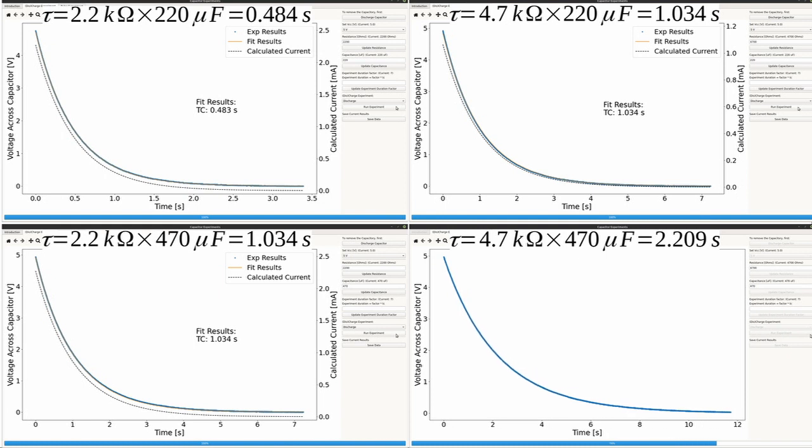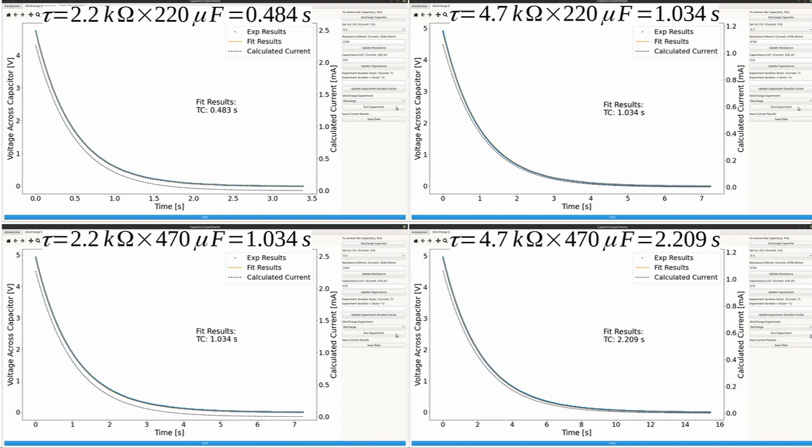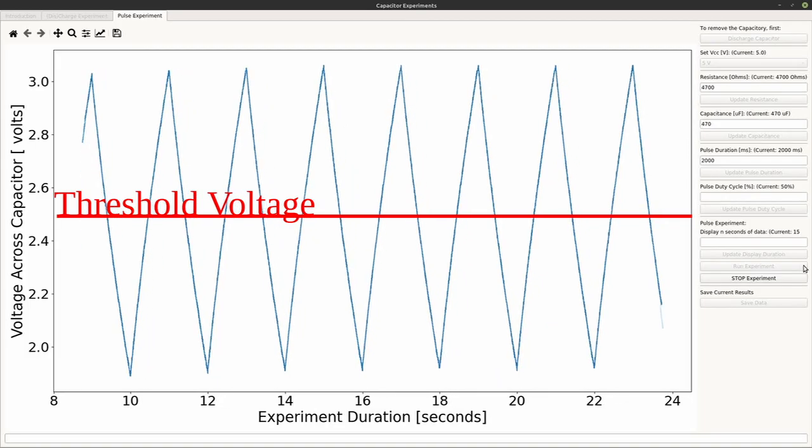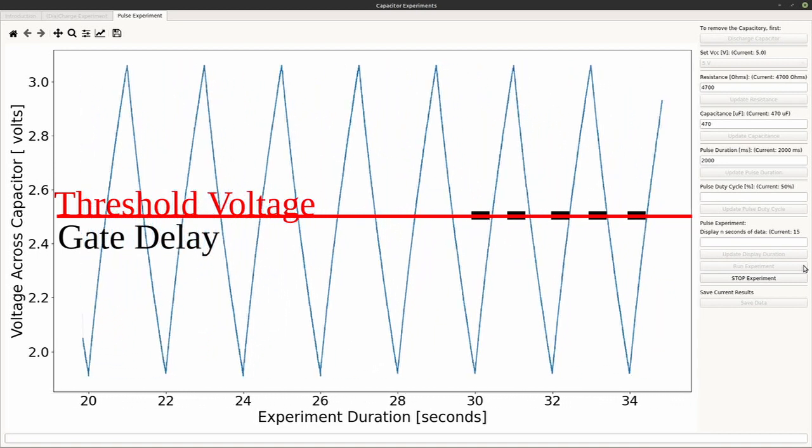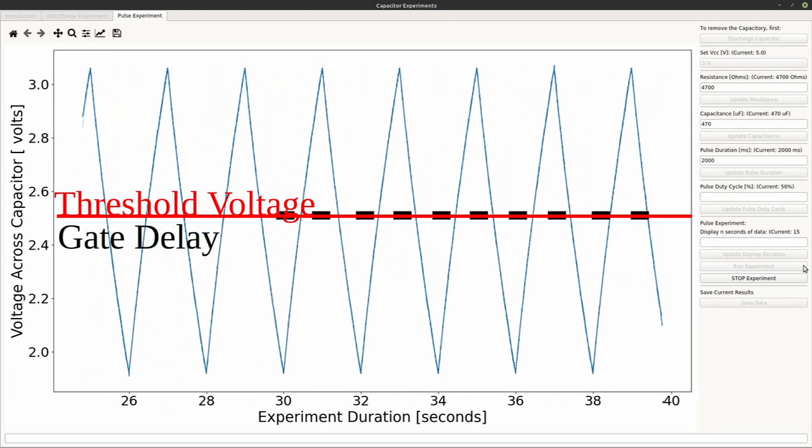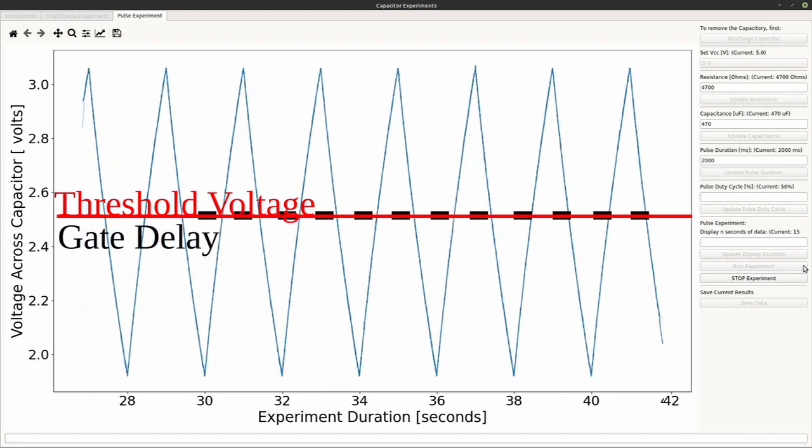With these results, we can consider the effects of capacitance on a computer processor. The transistors inside a CPU do not simply switch between high and low when a voltage is applied to them. Transistors have a small capacitance. Gate delay is the time required for current to flow in or out of a transistor, causing it to switch to a high or low state. As a result, the speed that a processor can run is limited by how fast the transistors can switch states.